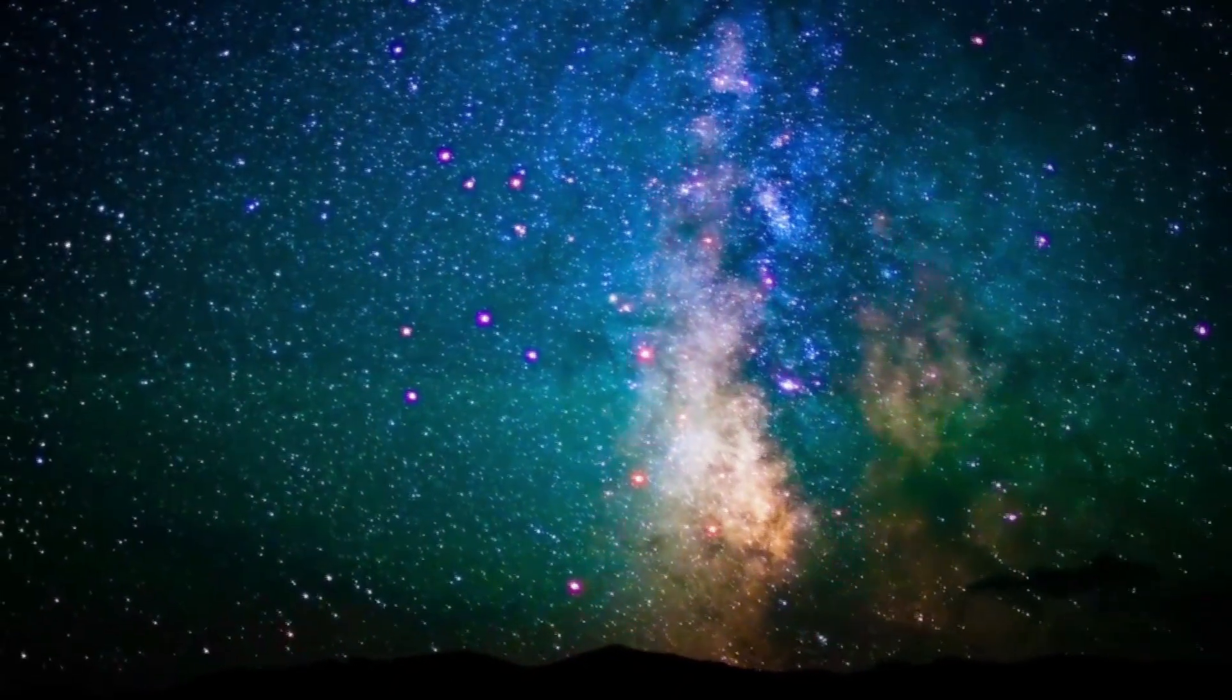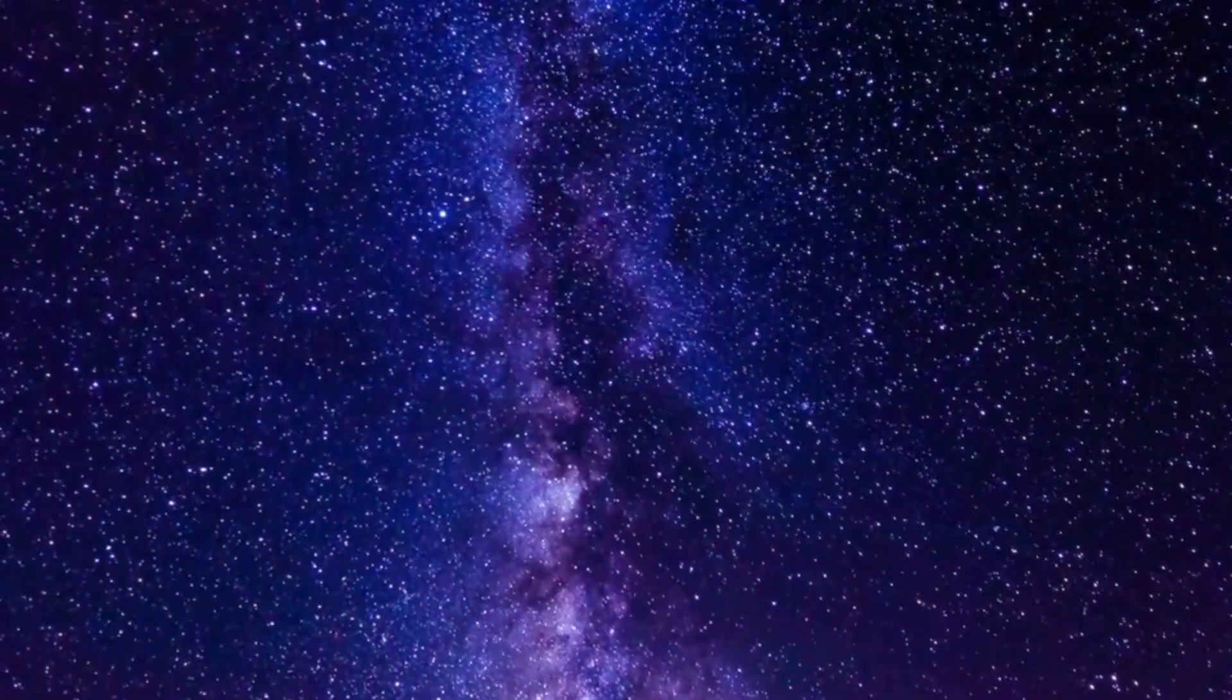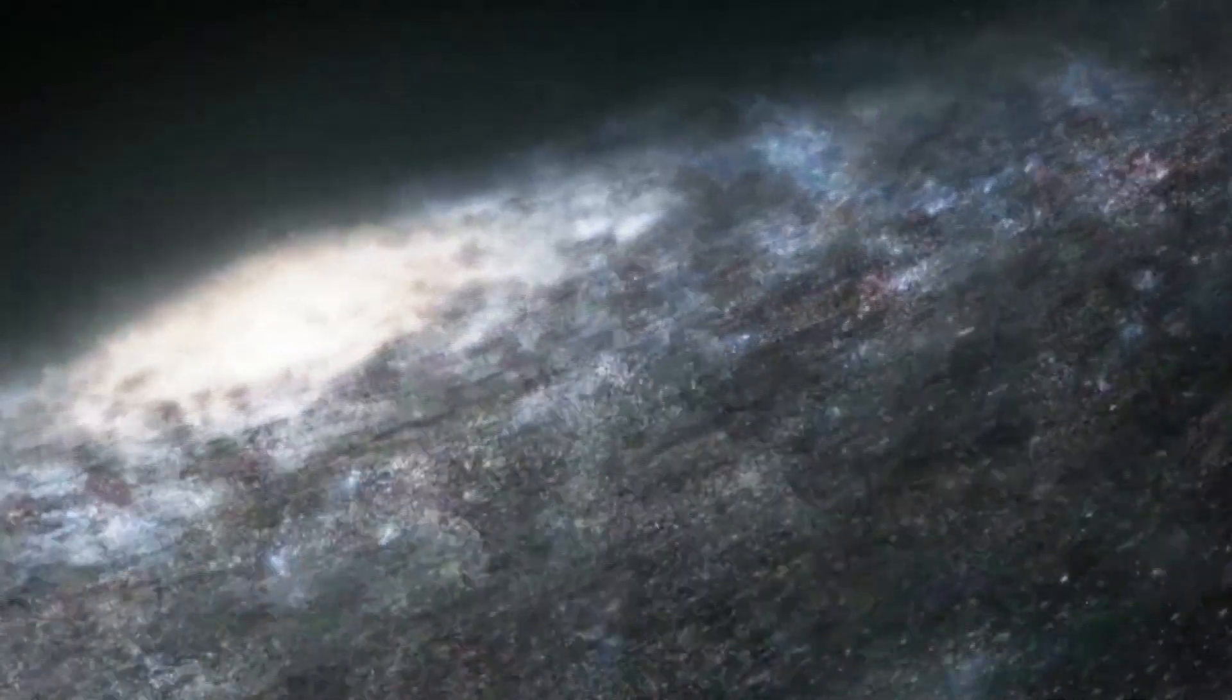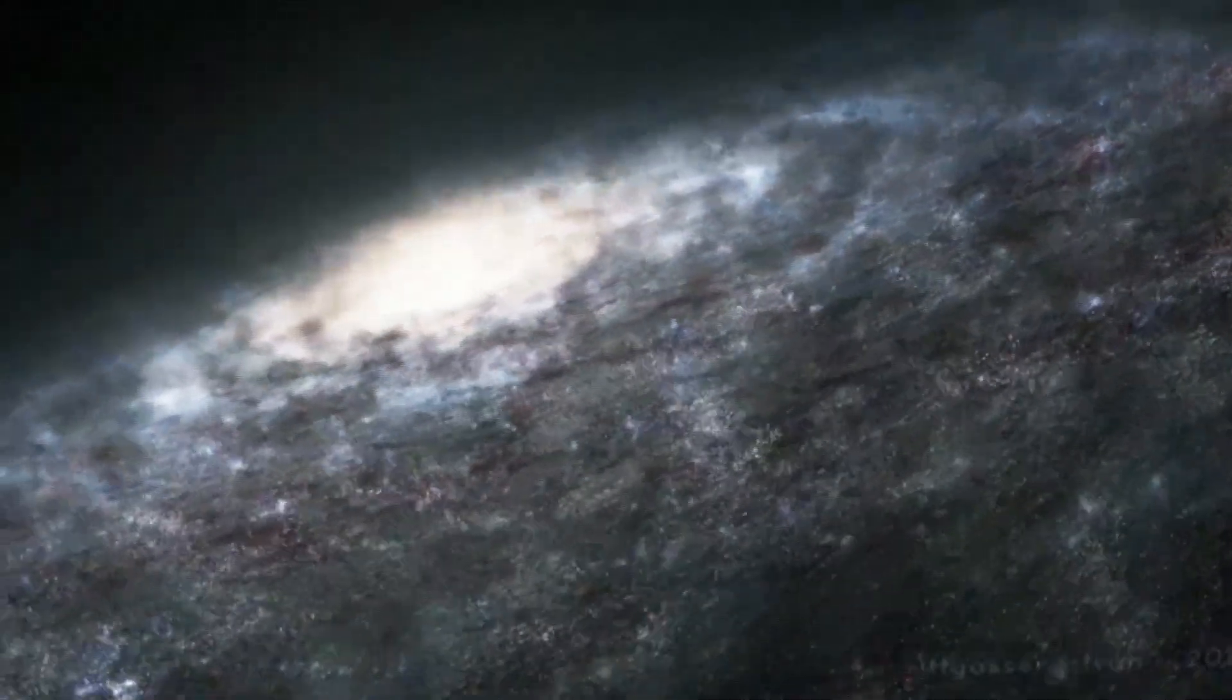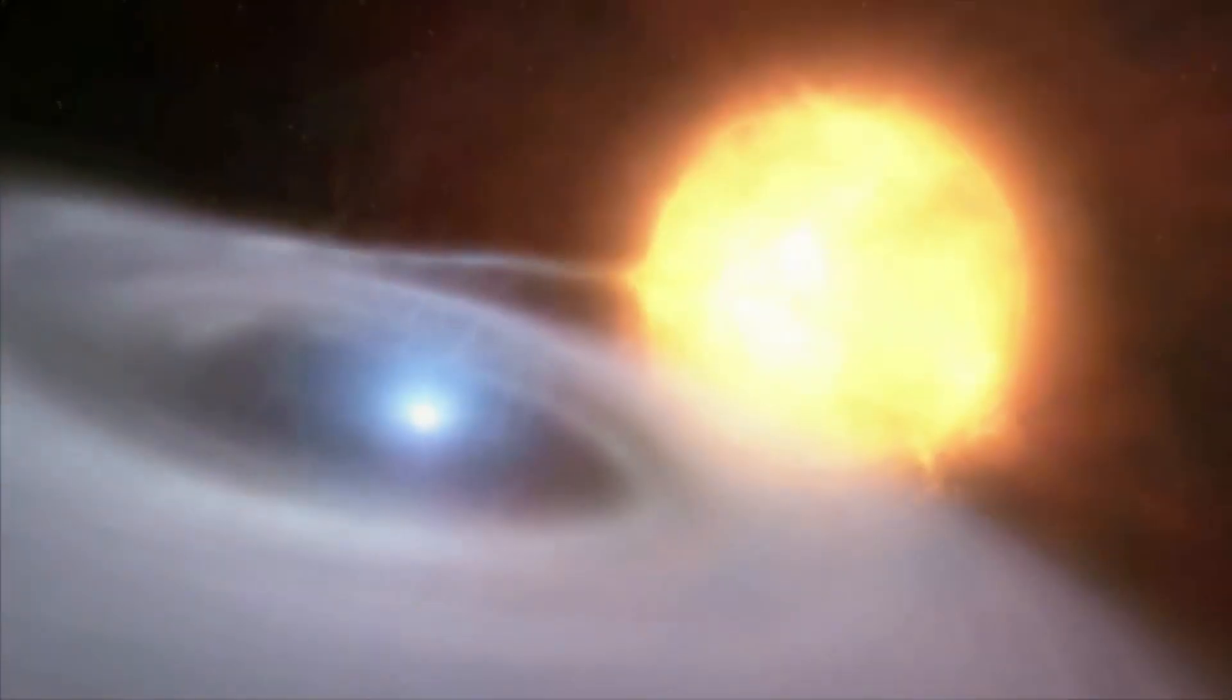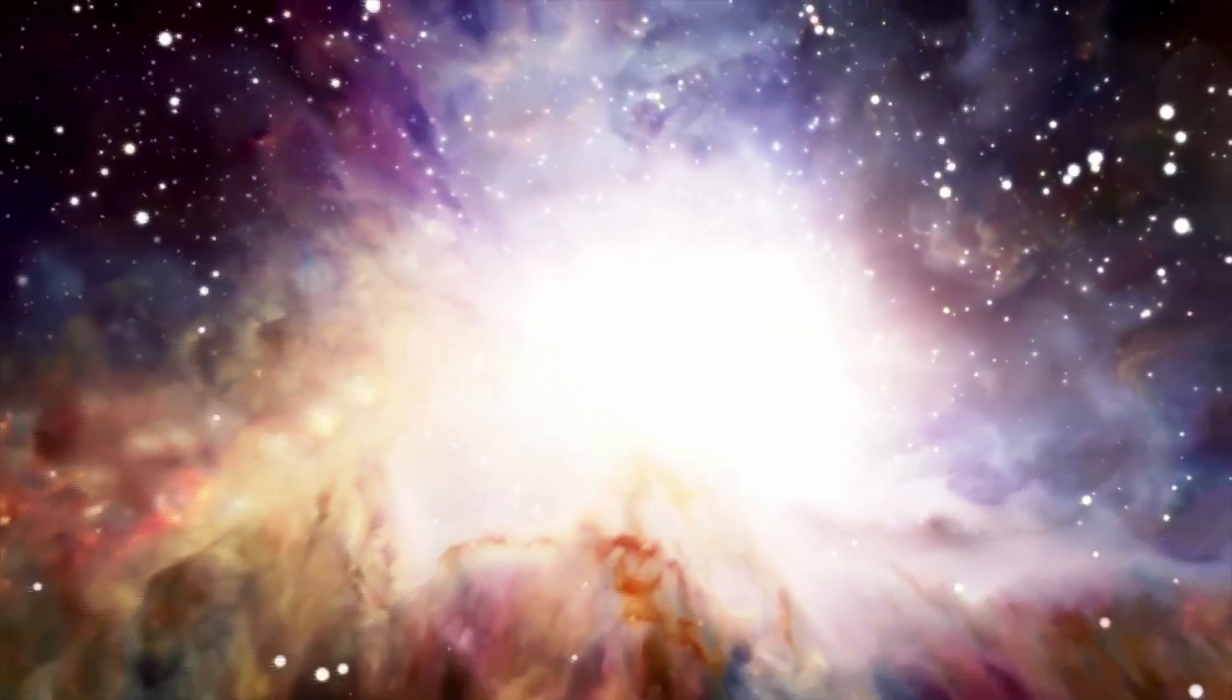This barred spiral galaxy, which is about a hundred light-years across and one thousand to two thousand light-years thick, contains our entire solar system. Our sun, a star in this galaxy, is situated in one of the arms called the Orion Arm.